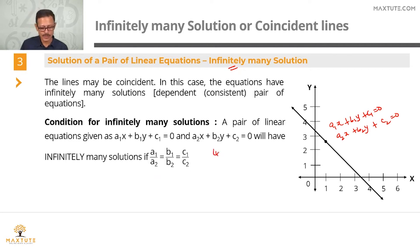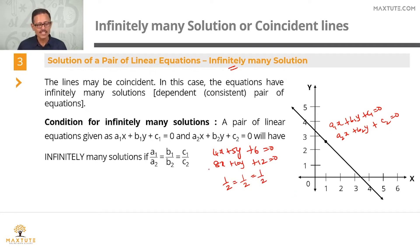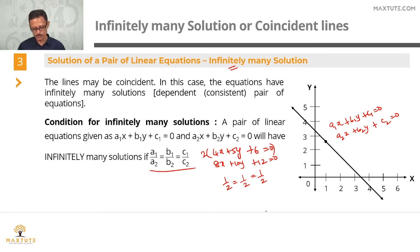For example, take 4x plus 5y plus 6 equals 0 and 8x plus 10y plus 12 equals 0. Here a1 by a2 is 4 upon 8 equals 1 by 2, b1 by b2 is 5 by 10 equals 1 by 2, and c1 by c2 is 6 upon 12 equals 1 by 2. So a1 by a2 equals b1 by b2 equals c1 by c2. The second equation is simply two times the first — they are equivalent, a dependent system with coincident lines.